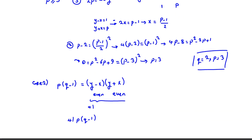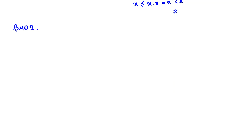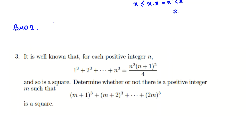Our only answer for this problem is Q=2, P=3. As homework, try the UK BMO Round 2, 2017–2018, Problem 3, which uses a similar idea. You can comment your answers below, or send a message via the WhatsApp number in the description. Thanks for watching — see you next time!